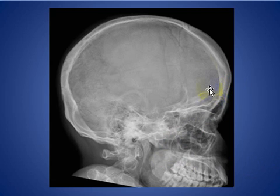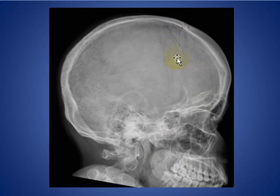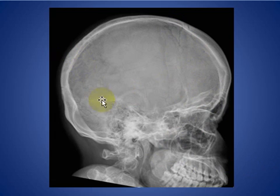...a lateral skull X-ray of an adult patient. You see here the coronal suture, and you see here the lambdoid sutures not overlying each other.